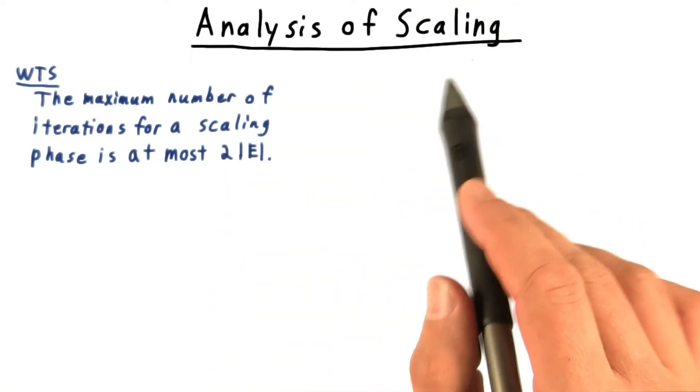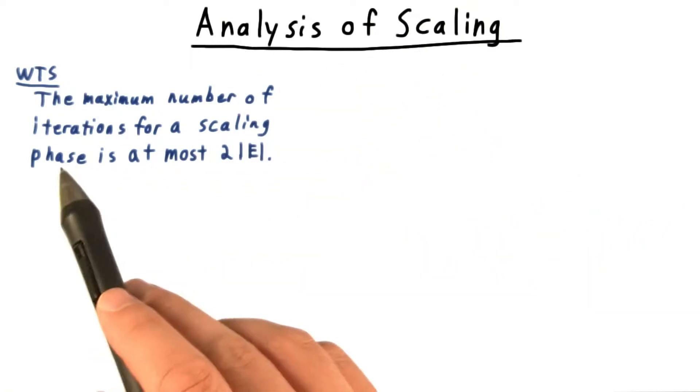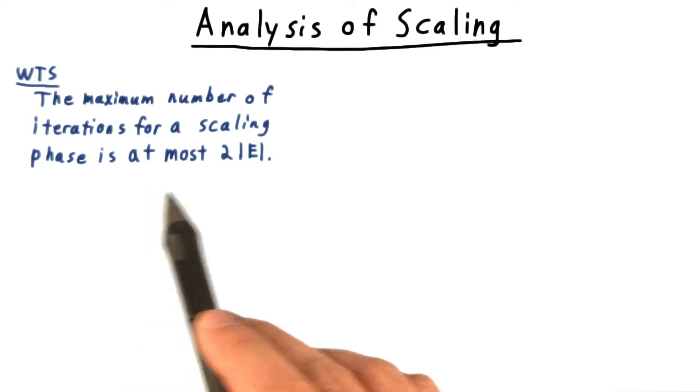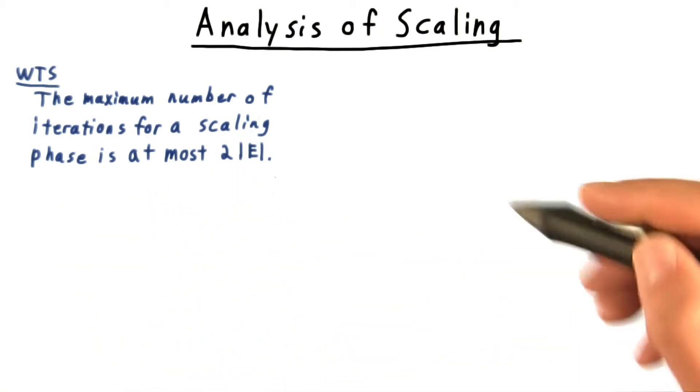The key claim in the analysis of the scaling algorithm is that the maximum number of iterations for a scaling phase is at most twice the number of edges.